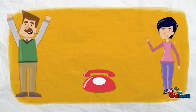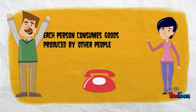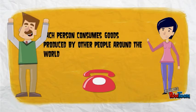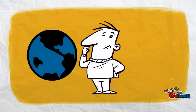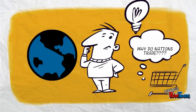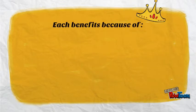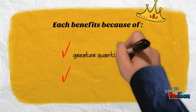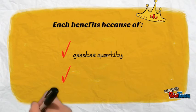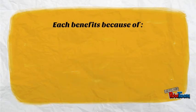We consume goods and services produced by many other people around the world. So, why do people do that? Why do countries trade? Interdependent interests are desirable because they allow everyone to enjoy a greater quantity and variety of goods and services.